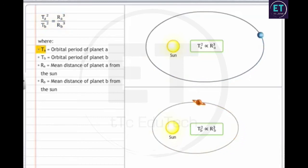Where T_A is equal to orbital period of planet A, T_B is equal to orbital period of planet B, r_A is equal to mean distance of planet A from the sun, and r_B is equal to mean distance of planet B from the sun.